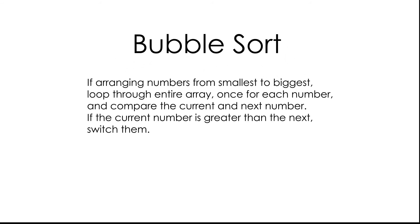Okay, here's my explanation of bubble sort in three minutes. Let's say you're arranging numbers from smallest to biggest. You're gonna loop through the entire array once for each number and compare the current and the next number.